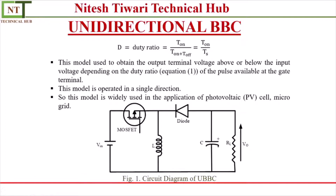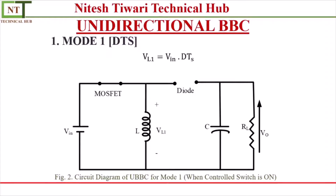This circuit works on two modes. In the first mode, your controlled switch is ON — meaning we have a short circuit there — and your uncontrolled switch (diode) is OFF, because the voltage on one side is greater. In this condition the inductor is charged: the circuit is completed so that all the power goes to the inductor, and the inductor starts storing energy. The direction of storage is shown by the positive and negative terminals.